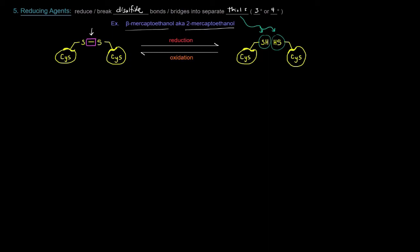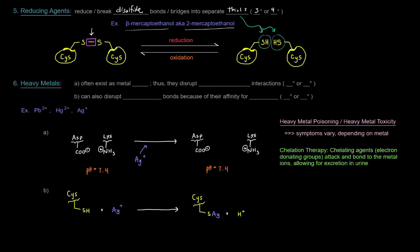Next up, heavy metals. So heavy metals often exist as metal ions, and they are specifically cations, so they're positively charged, and thus, they disrupt electrostatic interactions. So that'll be tertiary and quaternary structure. They can also disrupt disulfide bonds because of their affinity for sulfur. Again, that's tertiary or quaternary structure. Some examples of heavy metals are like lead, mercury, silver. Just to use a similar example that we did last time, if we have a pH of 7.4, we have aspartate and lysine next to each other, there's that attraction between them because of the opposite charges. But if you add in a silver, that silver ion being positively charged might want to hang out with the negatively charged aspartate, and there's an attraction there. It'll disrupt the interaction that was there between that aspartate and lysine.